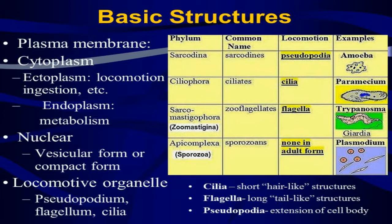Now the basic structure of Amoeba: Amoeba is a unicellular organism with no specialized organs — a very primitive structure. It has a plasma membrane as the outermost layer. The cytoplasm is divided into ectoplasm, used for locomotion and ingestion, and endoplasm, where metabolism takes place. There is a nucleus in vesicular or compact form. Locomotive organs are pseudopodia, flagella, and cilia. Cilia are short hair-like structures, flagella are long tail-like structures, and pseudopodia are extensions of the cell body.